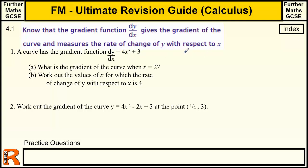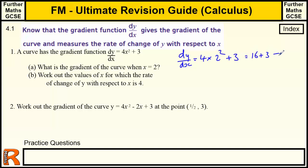dy by dx equals 4 times 2 squared plus 3. 2 squared is 4, 4 times 4 is 16, 16 plus 3 is 19. So the gradient when x equals 2 is 19. We just put the number 2 into the gradient function dy by dx and that gives us the value.